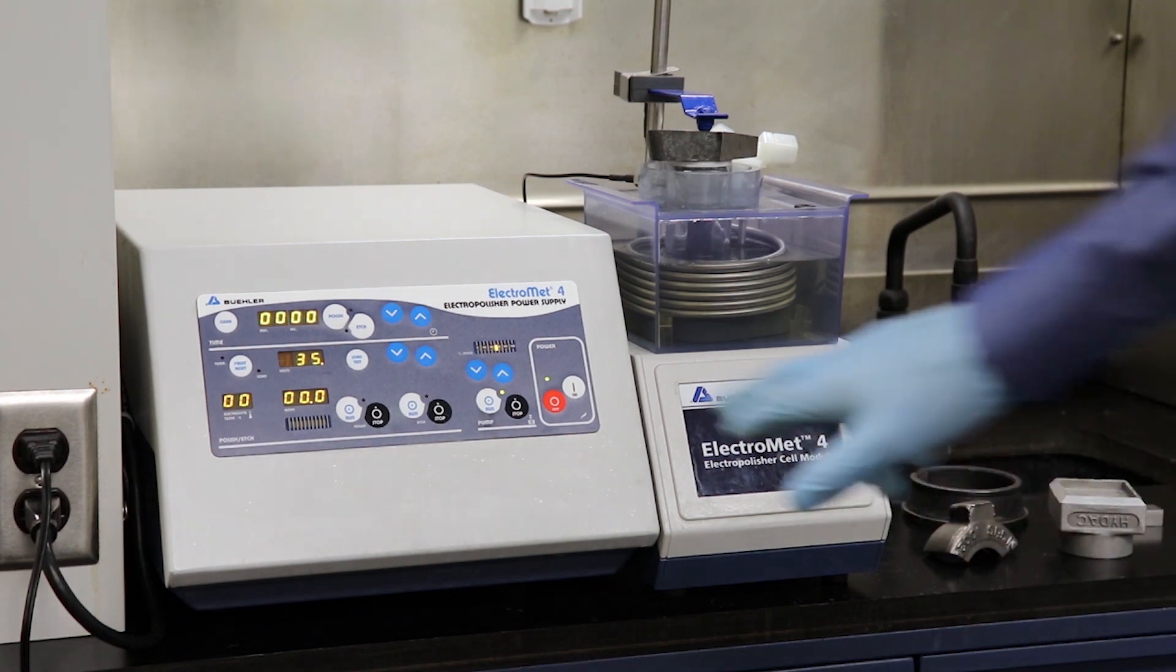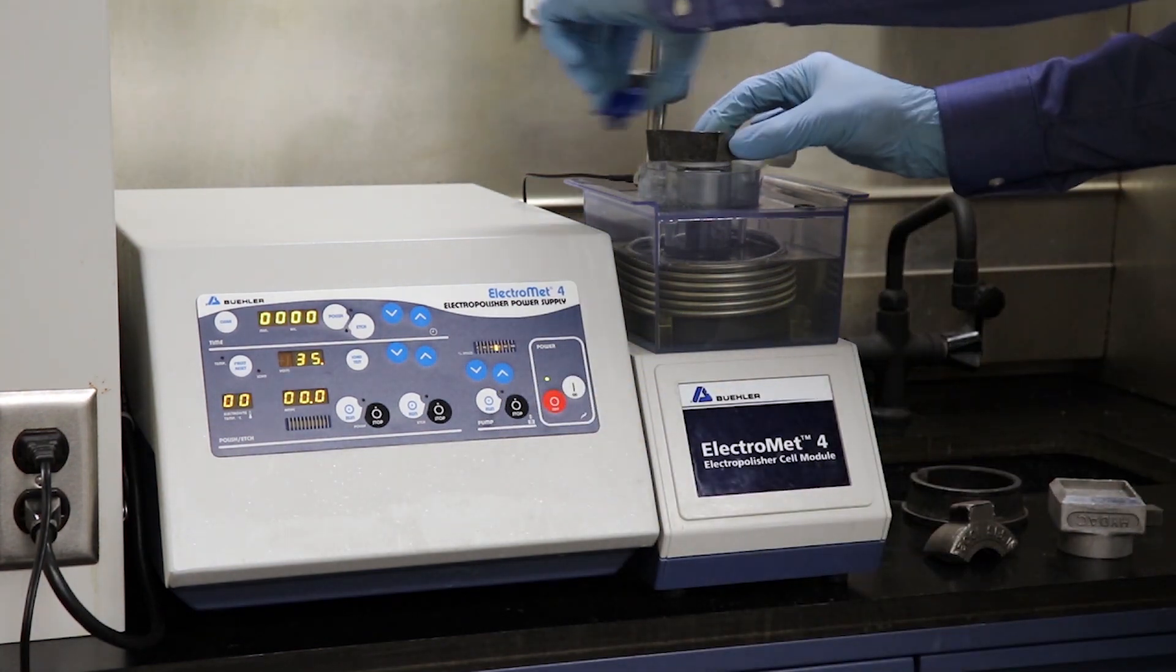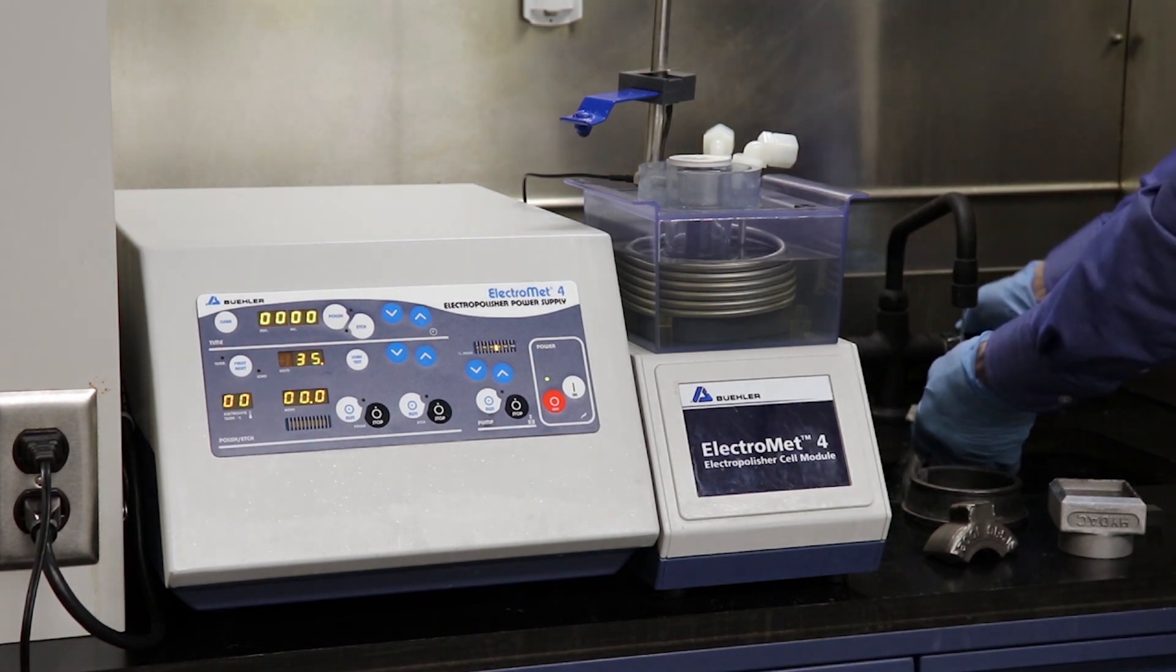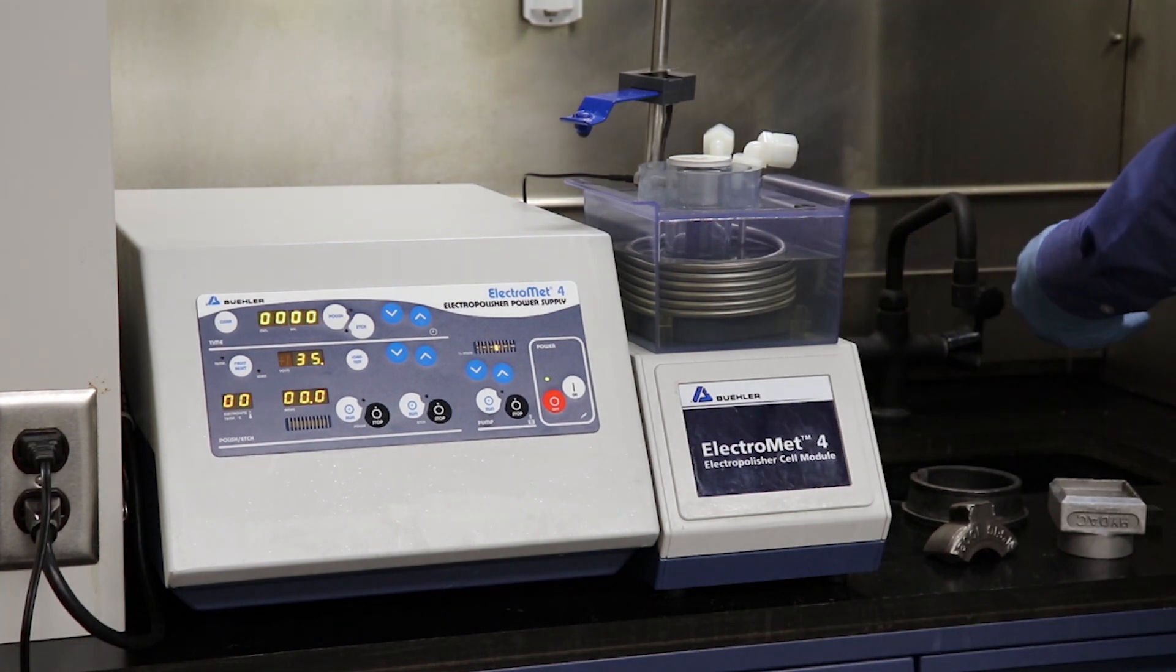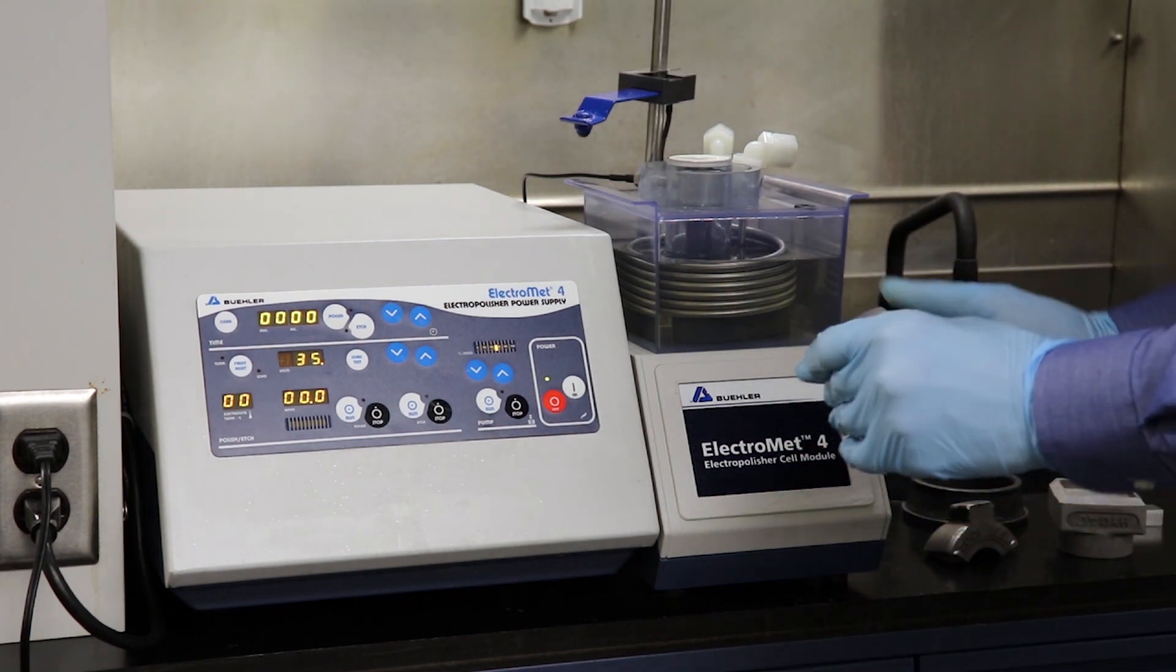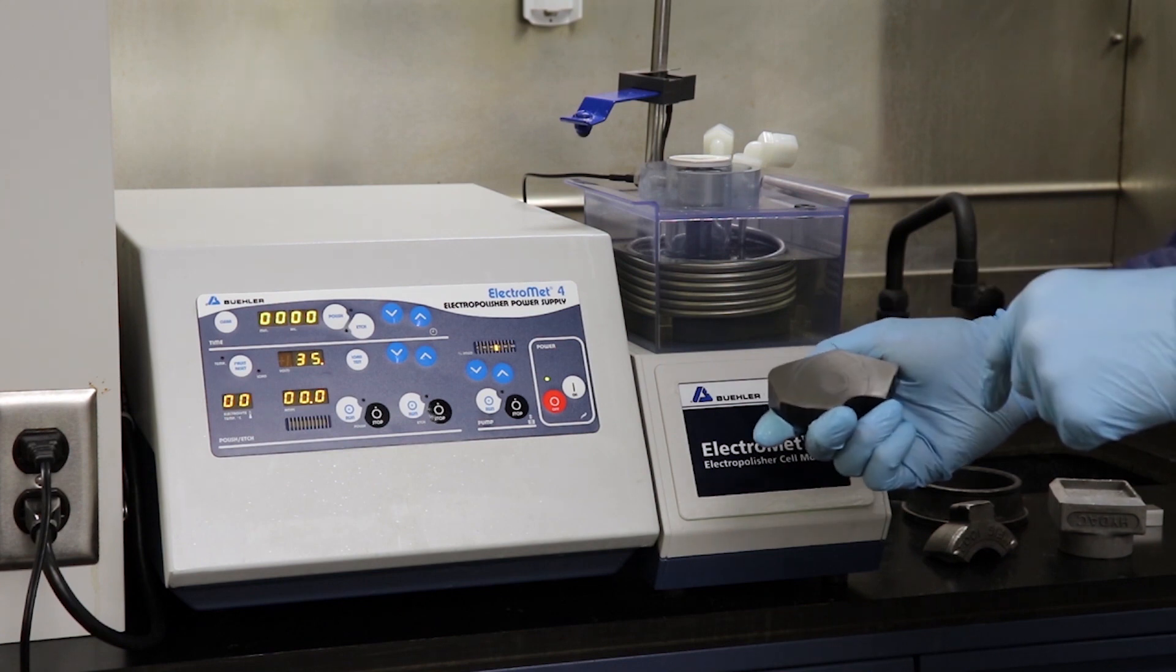The cycle is complete. I'm going to turn the pump off and we're going to take the sample from the cathode area. I'm going to rinse the sample, spray with some alcohol and dry, and we're ready to go look at the polished surface under the microscope.